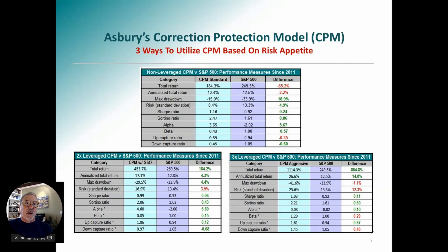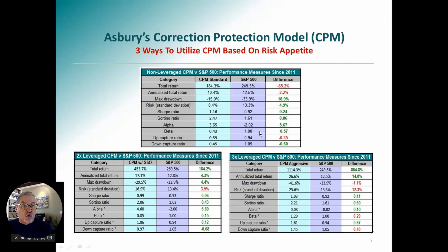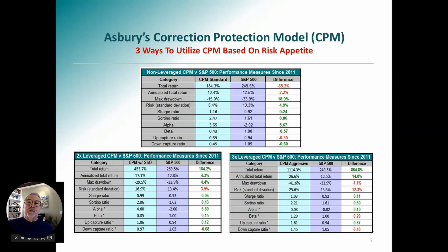Trading CPM with the S&P 500 or SPY over the past 11 years through 2021, it trailed the S&P by about 3.4% per year on average. You can find all this information at asburyresearch.com under the models tab. The beta during that time on CPM is 0.43 versus 1.0 for the S&P 500, so you're taking less than half the risk. The maximum drawdown is only 15% for CPM versus 34% for the S&P 500. The trade-off is it underperforms a little bit on average. But we found that using a leveraged ETF, you can build some risk back in and change the performance numbers.